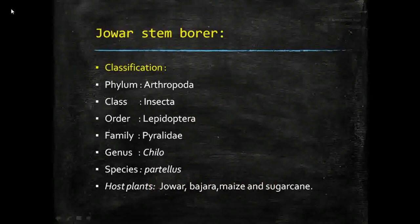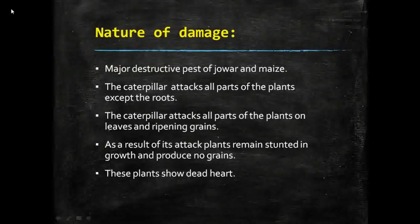Let's have a look at the classification of jawar stem borer. It belongs to phylum Arthropoda, class Insecta — common for all insects. It belongs to order Lepidoptera because it is a moth, family Pyralidae, and the genus and species name is Chilo partellus. Other host plants include jawar, bajra, maize, and sugarcane.